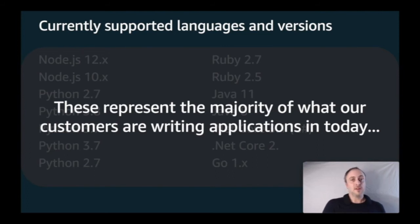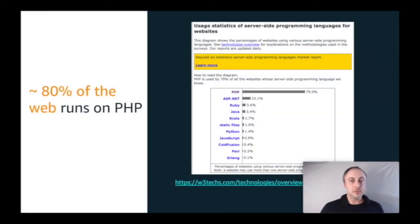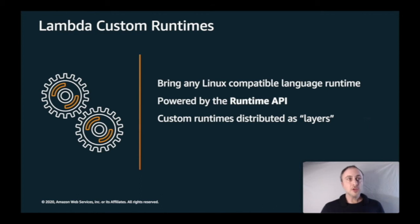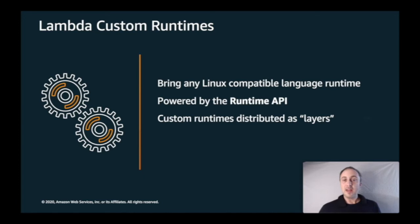AWS is very good at listening to its customers, so if they see enough PHP demand for Lambda there's every chance it will be natively supported in the future. But the good news is it's actually very easy to build Lambda functions using PHP today — not just PHP but any Linux-compatible runtime — powered by something called the Runtime API, which can be distributed as a Lambda Layer.